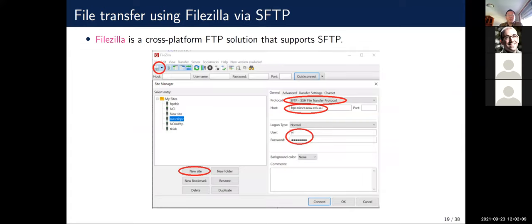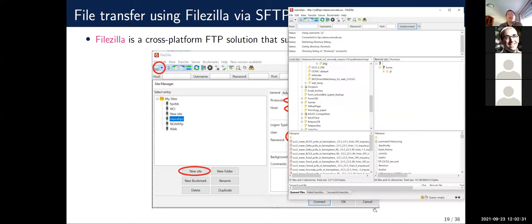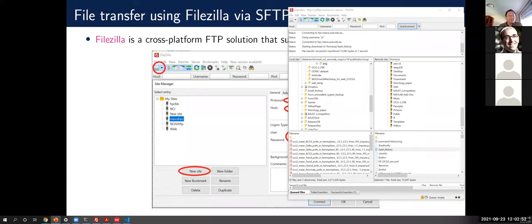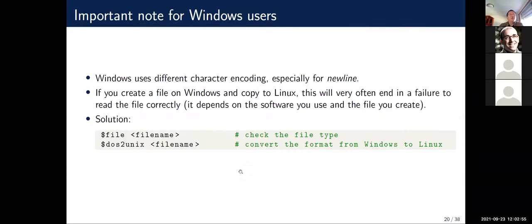If you prefer a GUI interface, I recommend FileZilla. You just need to set up the HPC site by creating a new site, giving the URL, username, and password, and choosing the SFTP protocol. Click connect and you're done. After connection, the left side shows your local path and the right side shows the remote side — to copy a file you just drag and drop.